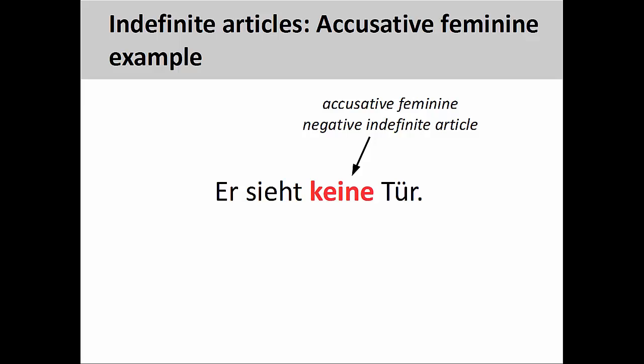In this sentence, 'Er sieht keine Tür' — he sees no door, or he doesn't see a door — the noun does not have a plural ending, but it does receive the action of the verb. In this case, keine would be accusative feminine.